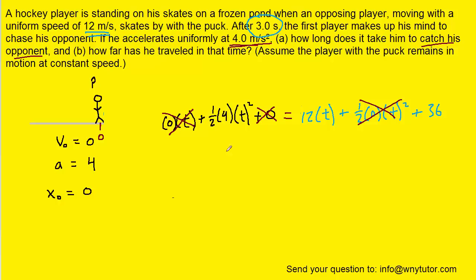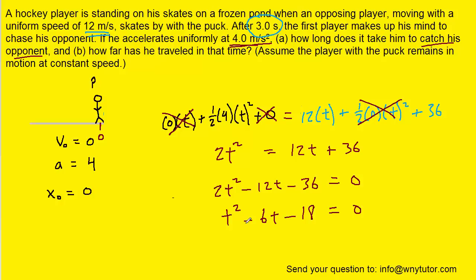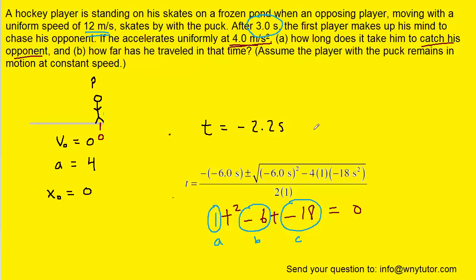We multiply one-half by four, then subtract 12t and 36 over to the left side of the equation. Dividing each term by two gives us a quadratic equation with a t-squared term, so we use the quadratic formula to solve for t. With a equal to positive one, b equal to negative six, and c equal to negative 18, the quadratic formula yields two answers: negative 2.2 seconds and positive 8.2 seconds. We cannot have negative time, so we eliminate that — 8.2 seconds is the time it takes for the player to catch the opponent.